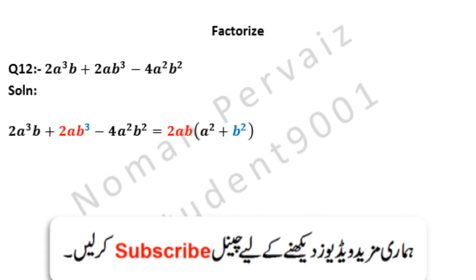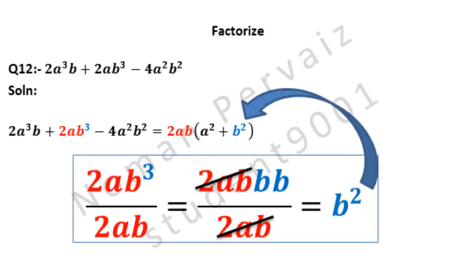Now look at the second term. Since 2ab is common, b² will be left only. Since 2ab is common, we divide 2ab³ by 2ab. Here 2a is written as it is, and b³ is written as b × b × b. Then 2a and b are cancelled with 2a and b, and only b² will be left behind. This b² is taken to our solution.